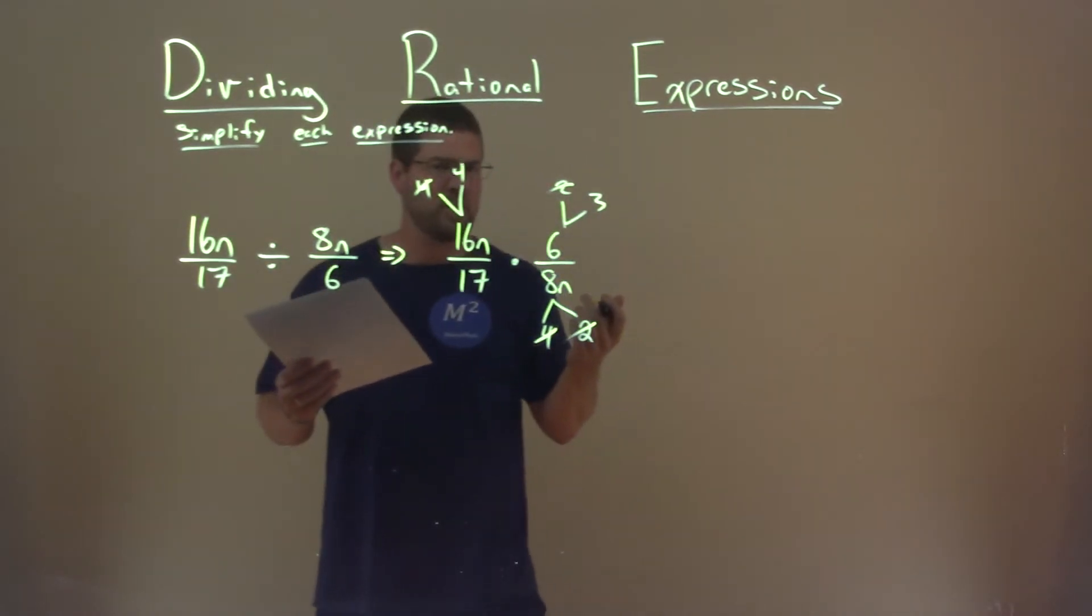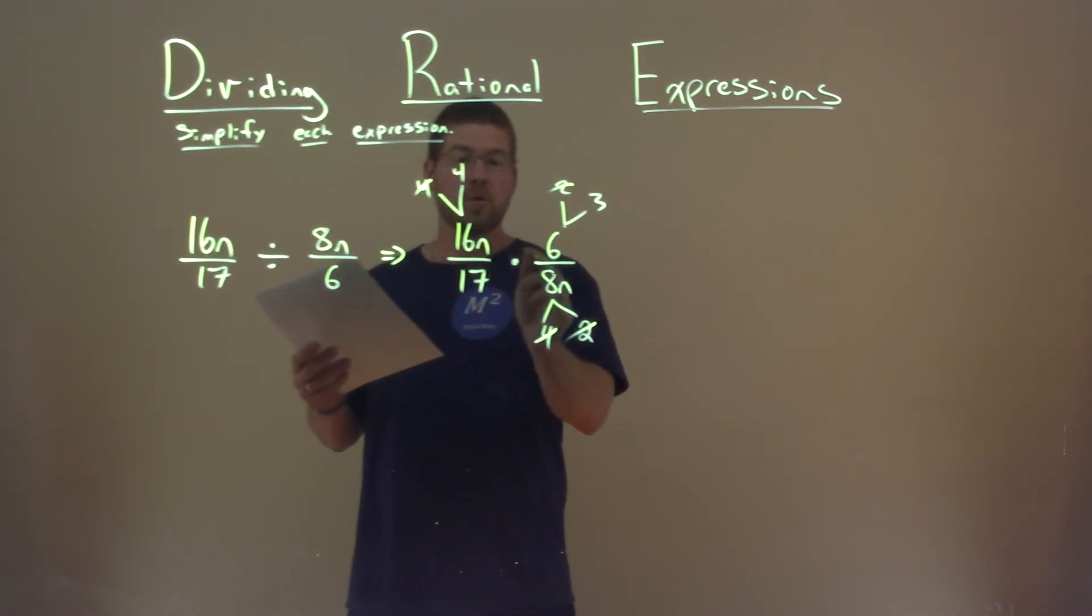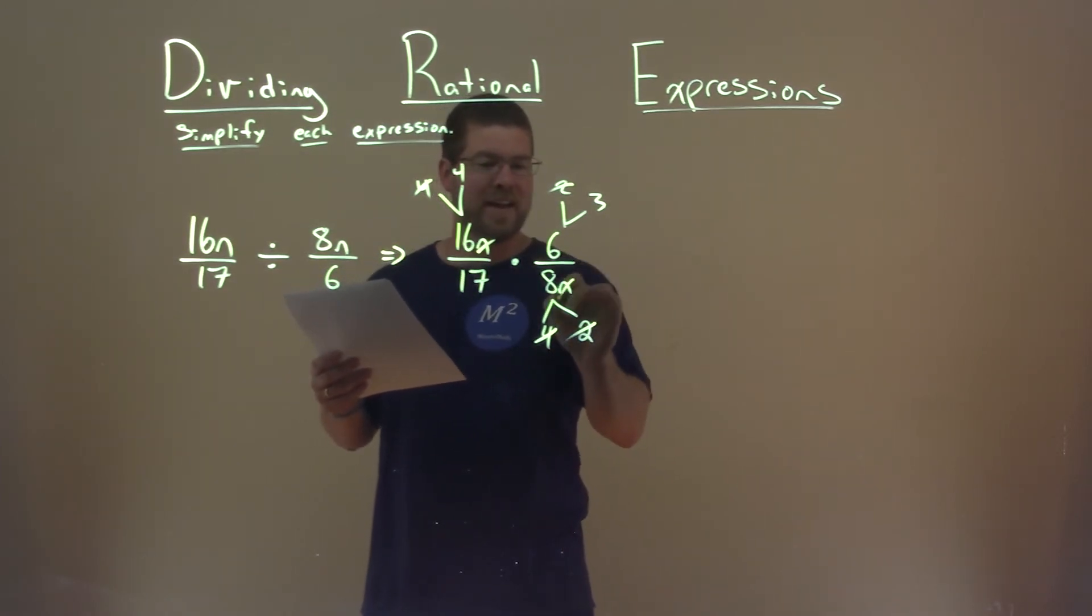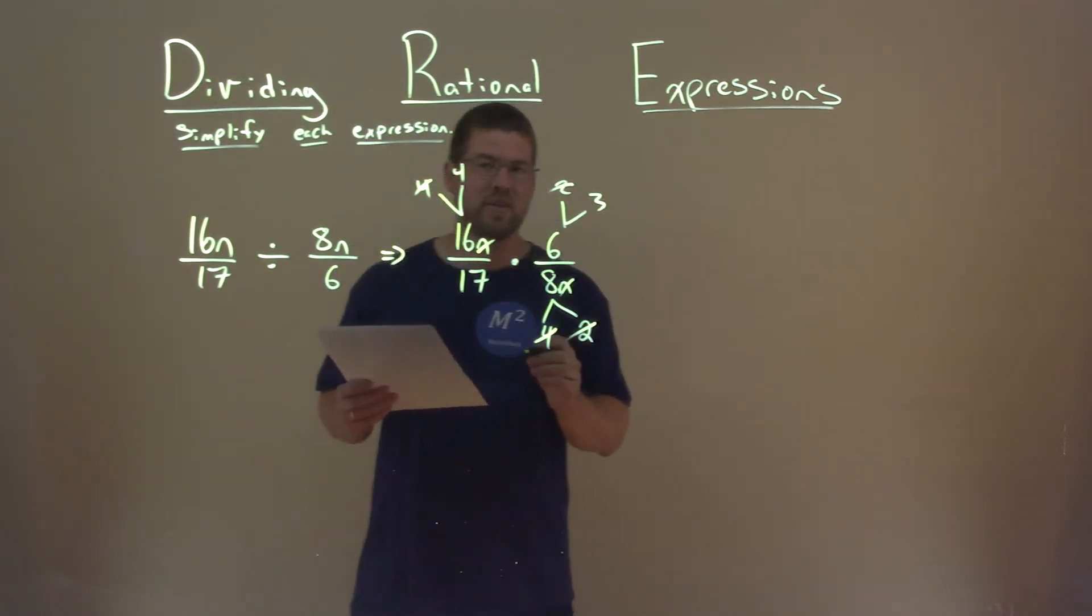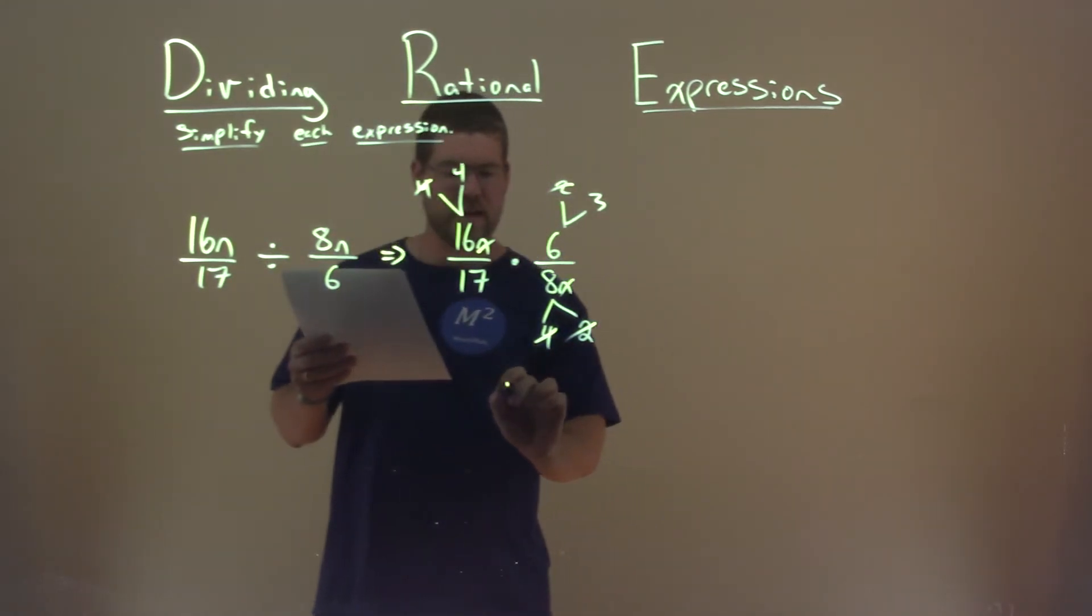And what are we left with now? So across, we have the numerator. Oh sorry, the n is too. I almost forgot the n and the n here cancel each other out. So numerator, we have 4 times 3, which is 12.